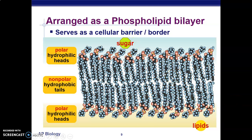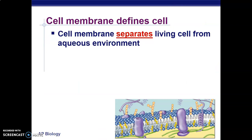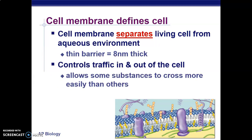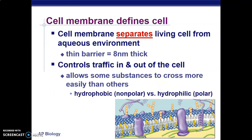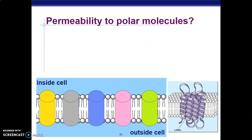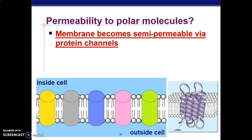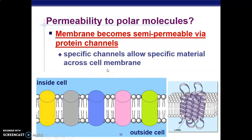The cell membrane separates the living cell from the aqueous environment and acts as a thin barrier, controlling substances moving in and out of the cell. The hydrophobic versus hydrophilic polar ends determine the permeability of these molecules. The membrane is a semi-permeable barrier with protein channels that allow some substances to pass while blocking others.